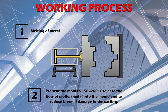These are the basic steps to follow in permanent mold casting. First, melting of metal — put the metal in the furnace and set it to the required temperature. Next, preheat the mold to 150 to 200 degrees Celsius. The mold is preheated to ease the flow of molten metal into the mold and to reduce thermal damage to the cast.